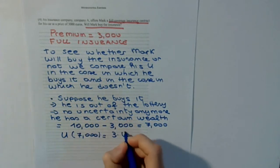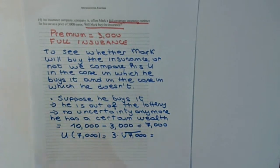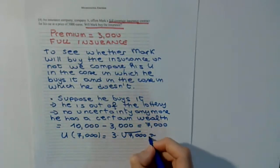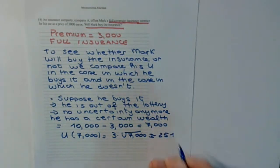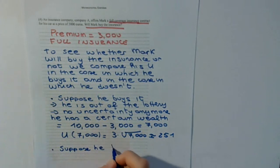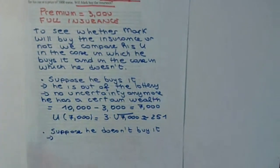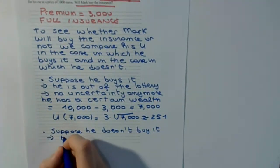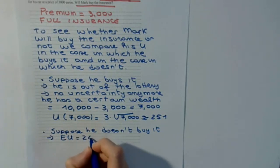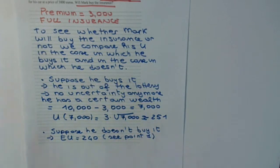We can compute the utility given by this 7,000. We talk about utility — not expected utility — because everything is now certain. Utility of 7,000 equals 3 times the square root of 7,000, which is approximately 251. If he doesn't buy the insurance, he is in the same situation as in part 1, where his expected utility is 240.